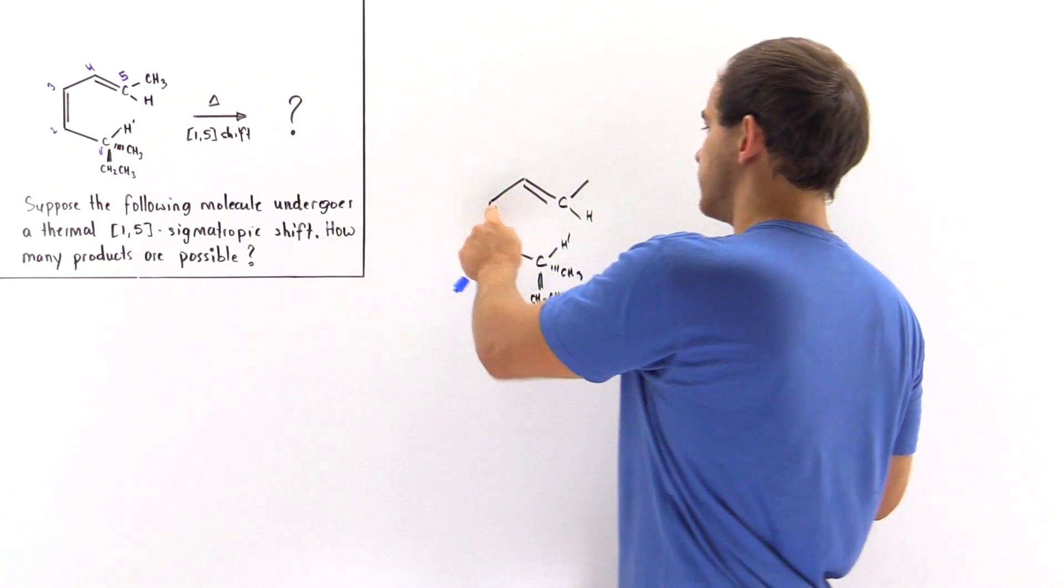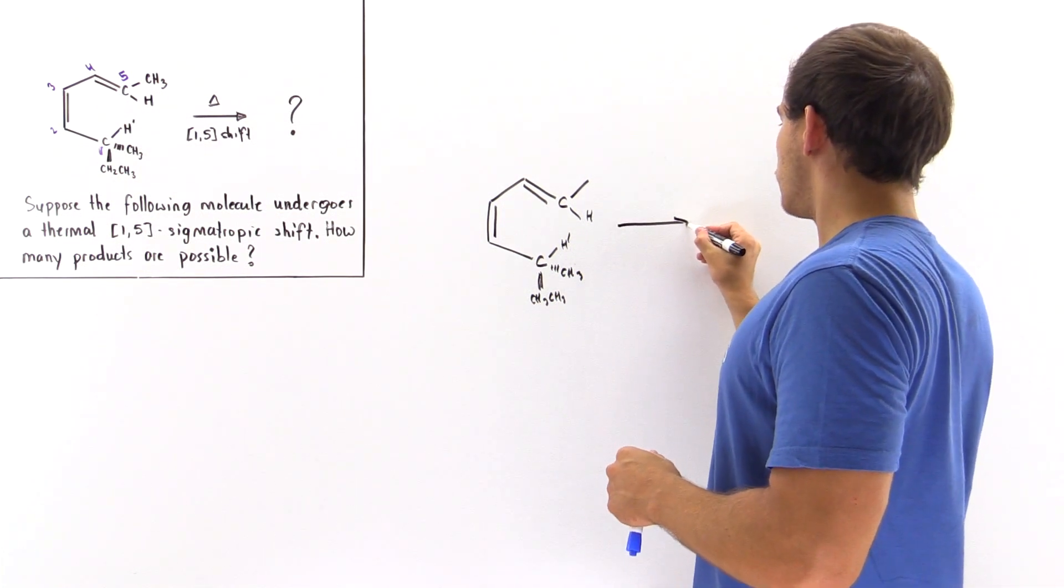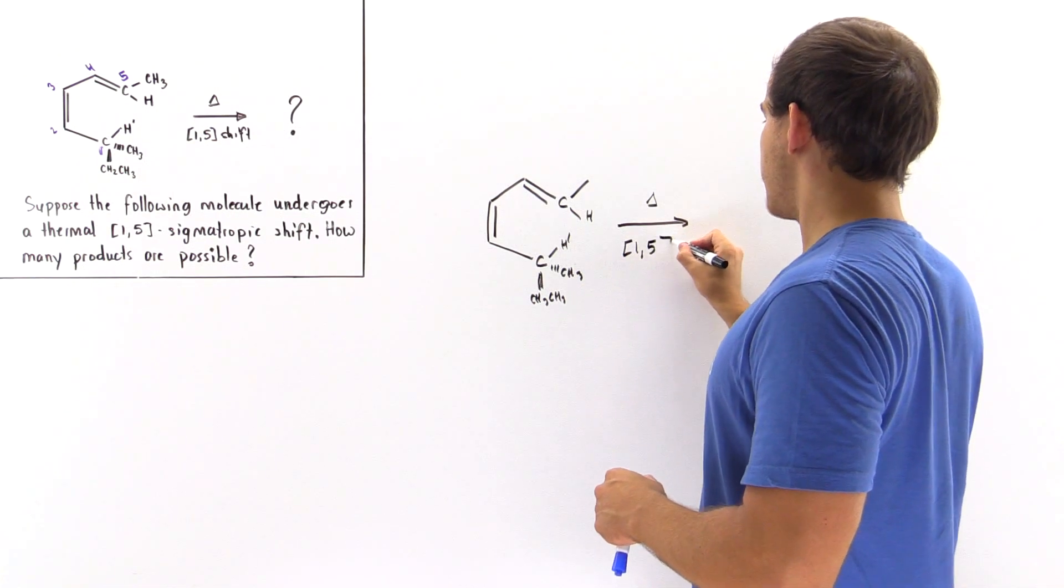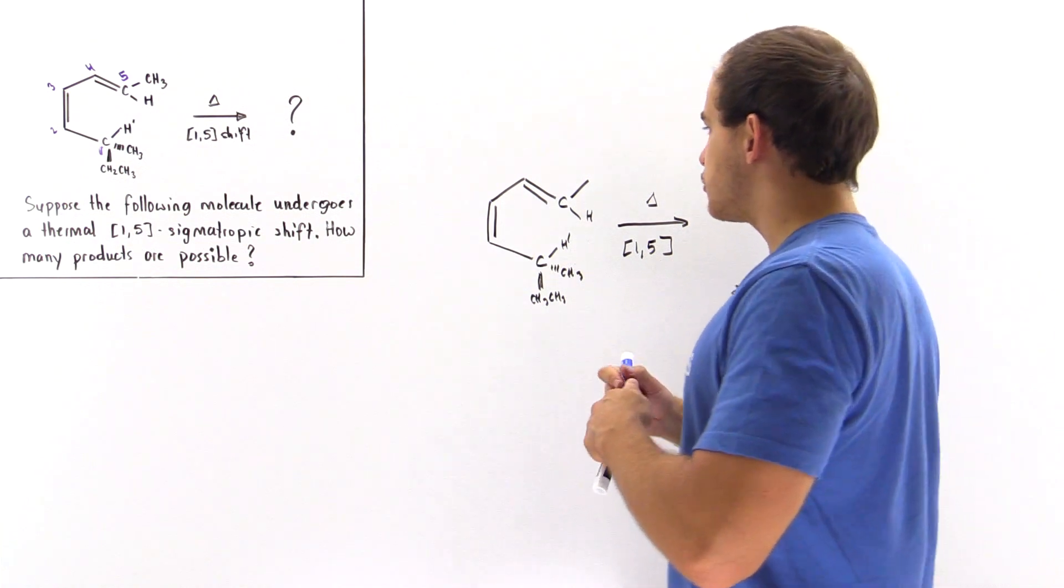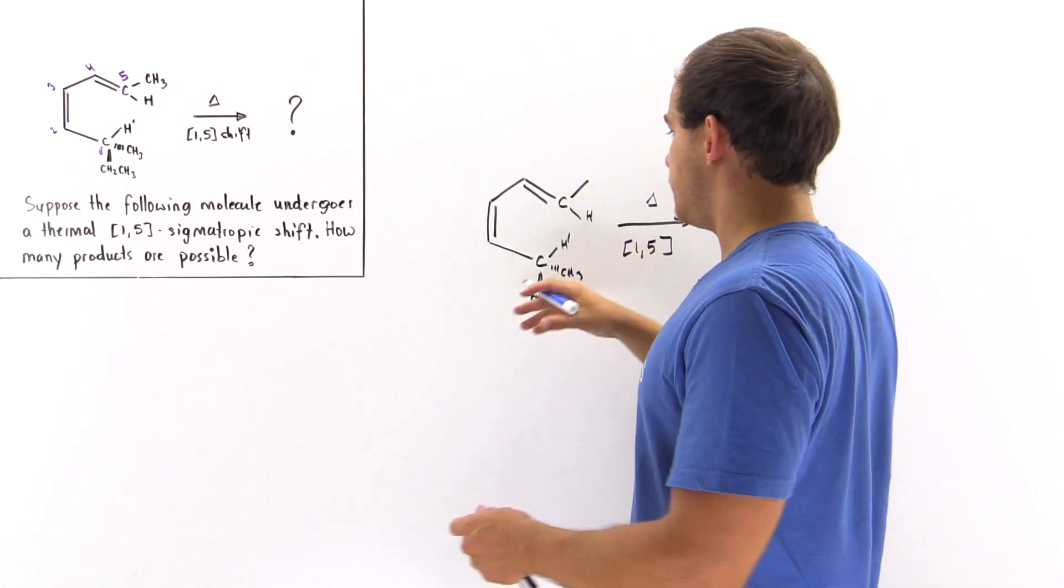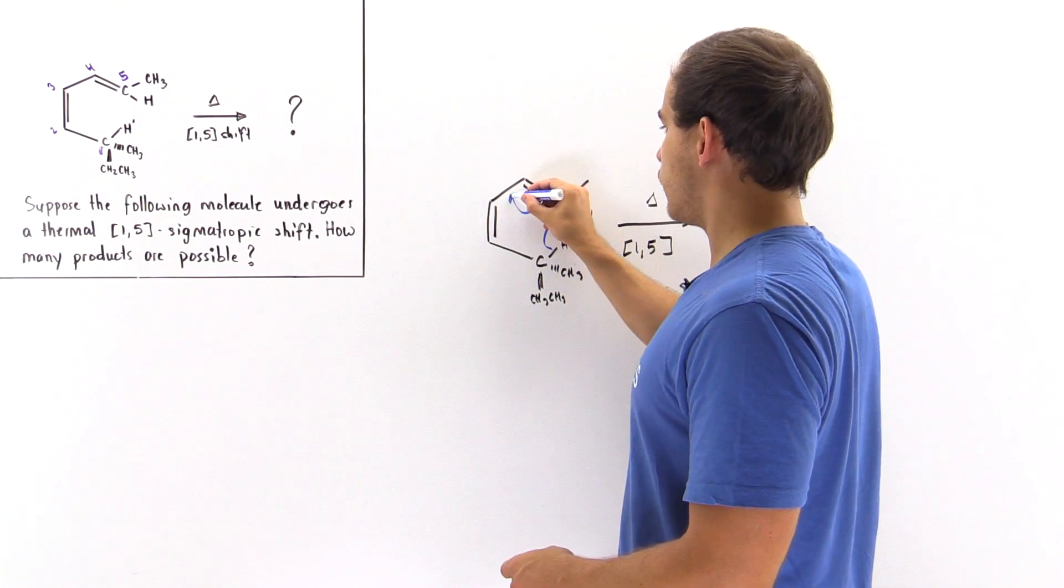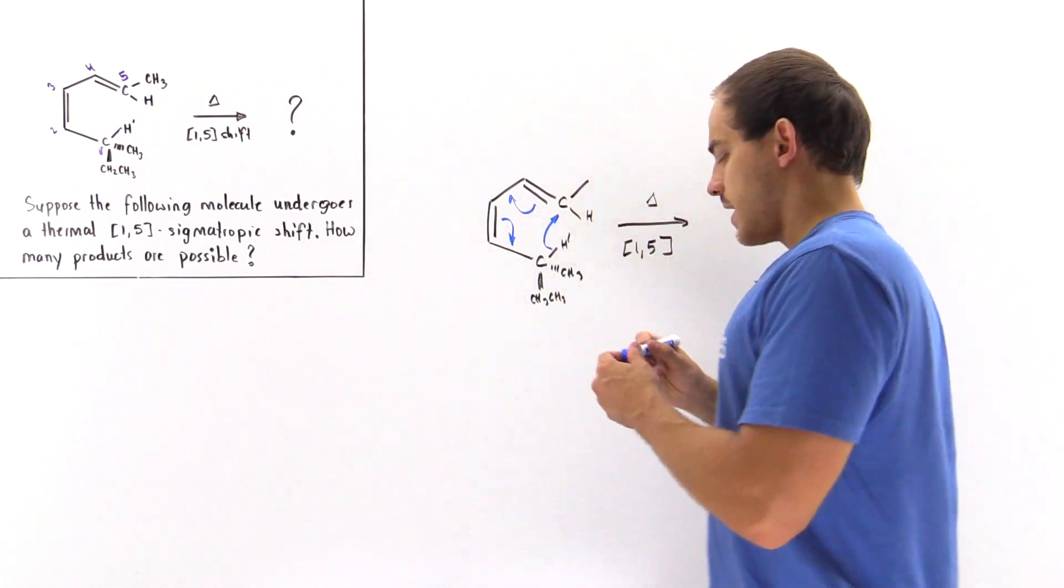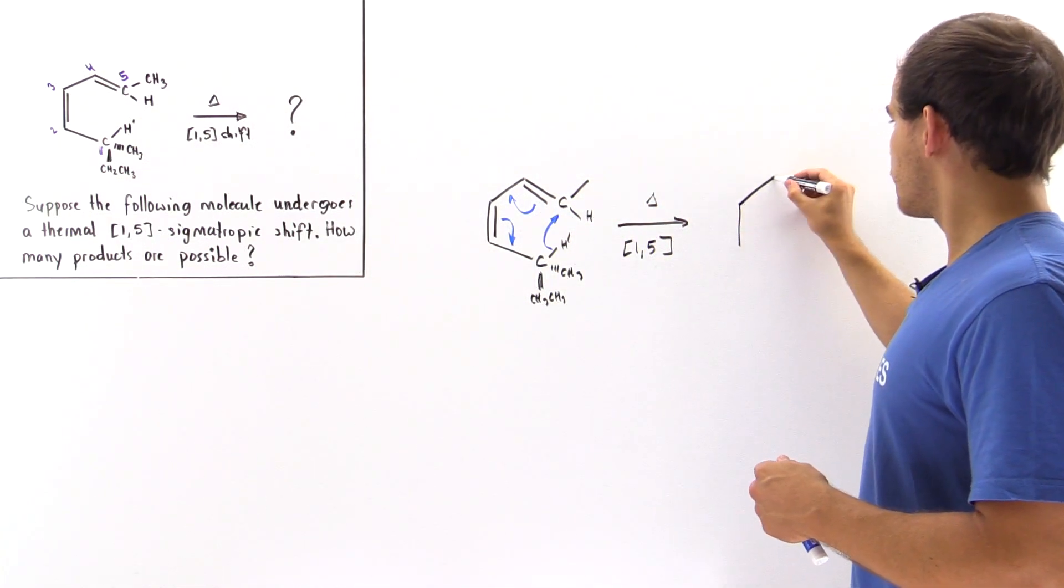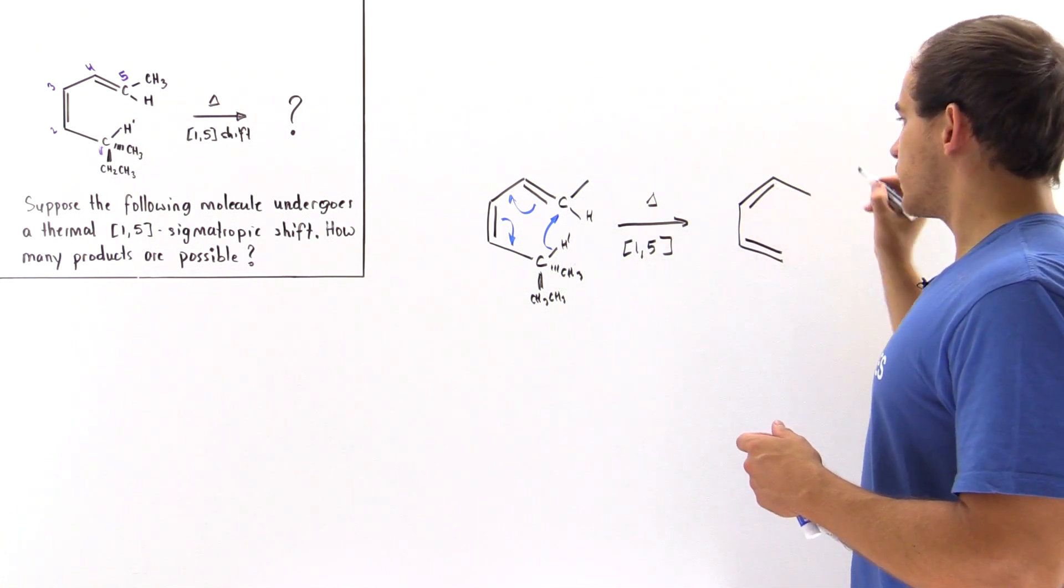So in the first and only step, remember a sigmatropic shift takes place in a concerted step. We basically have a rearrangement of our pi bonds because this H' begins to move and migrate onto the fifth carbon. So we have this arrow formalism. And when this takes place, we have a molecule that looks like this with a specific stereochemistry.